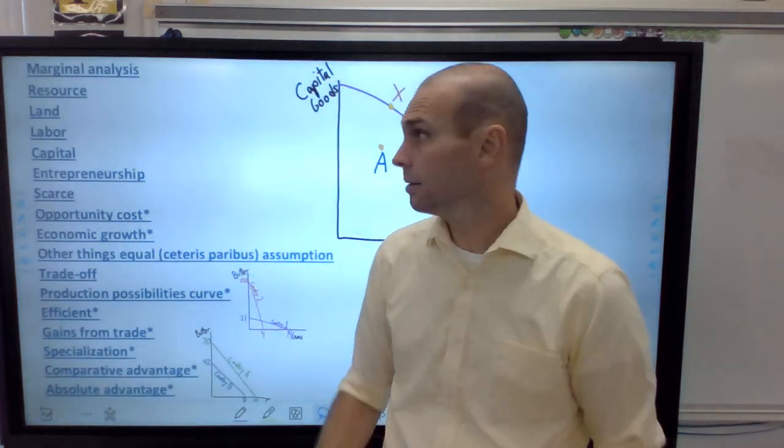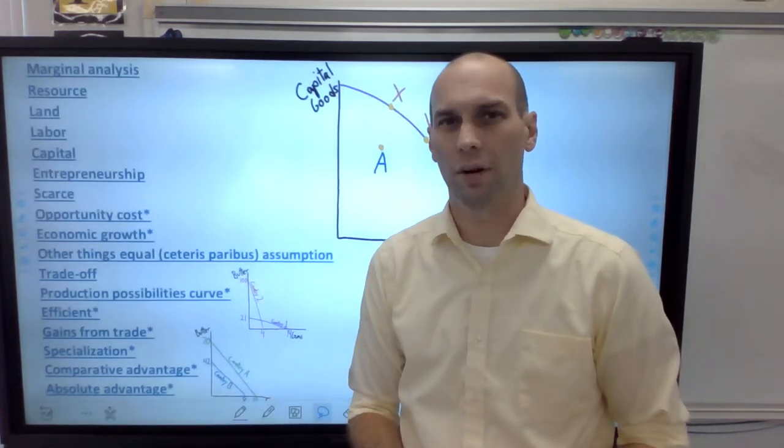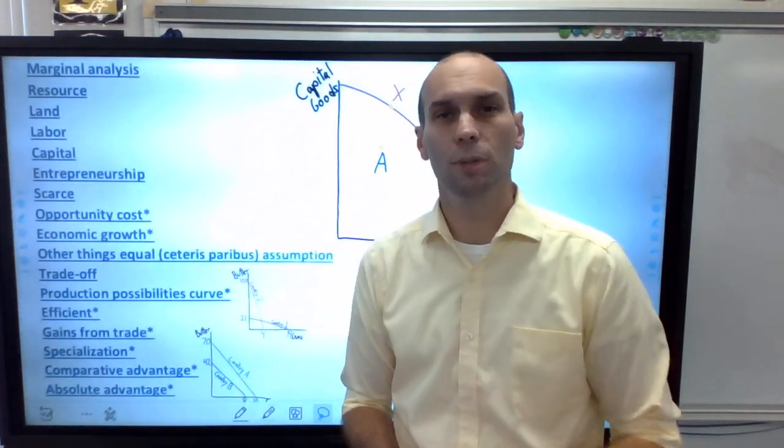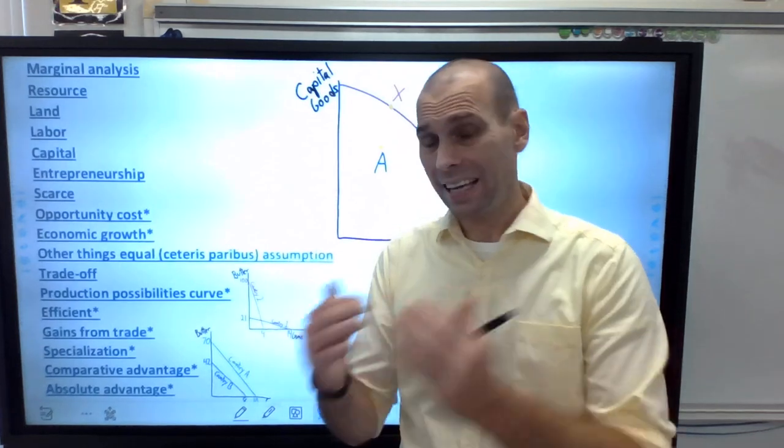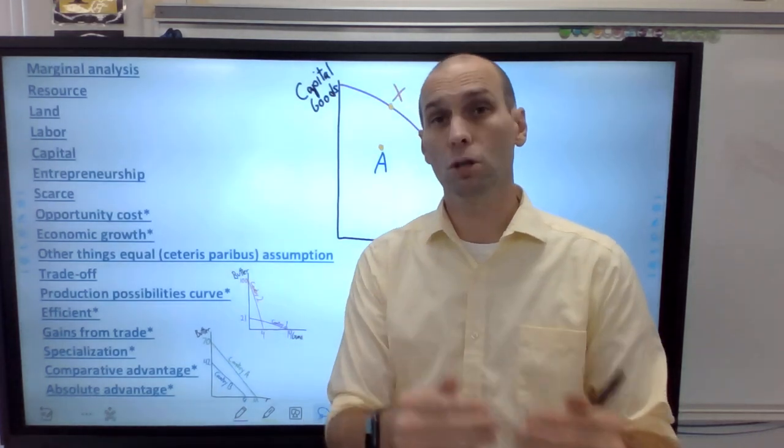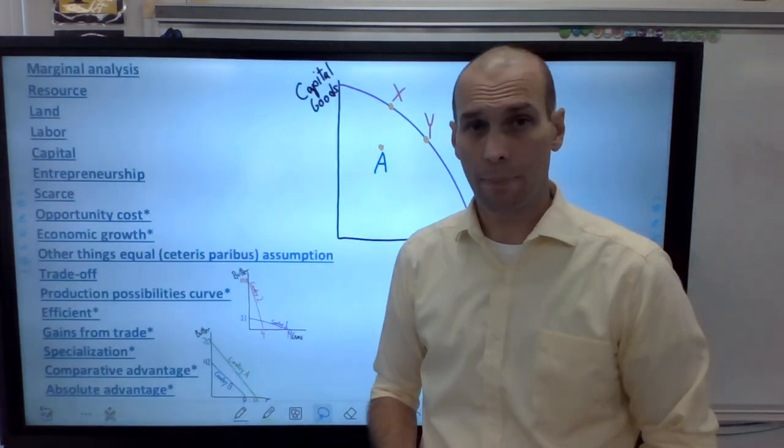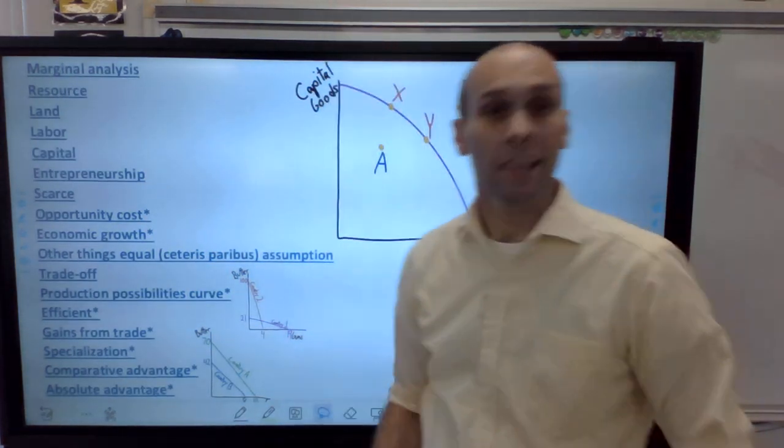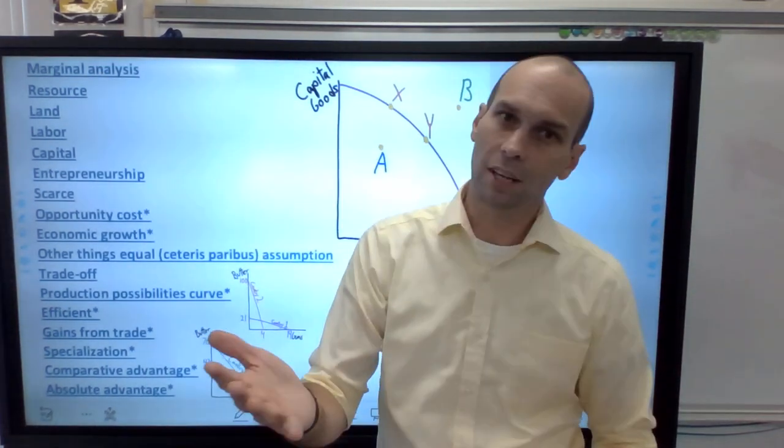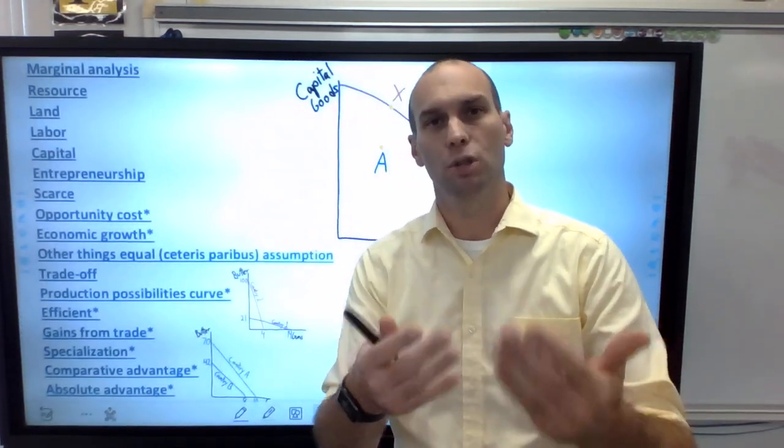A robot would fall under capital. So capital is one you guys have a hard time remembering as the year goes on, but it's really simple. It's all man-made goods used to produce goods and services. So we make capital, but those capital goods are also used to make other goods and services. What are examples of capital? Well, this new whiteboard here is capital.